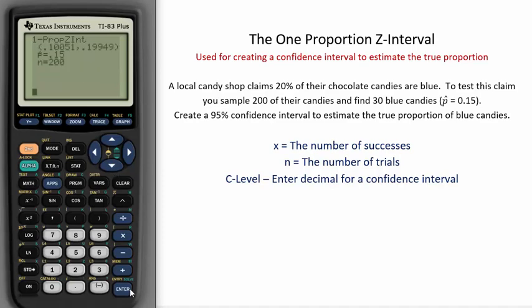When we hit Calculate, we are given our interval. I am 95% confident the true proportion of candies that are blue is contained in the interval 0.10051 to 0.19949. Even though the interval is close, 20% is not inside of our 95% confidence interval for the true proportion of blue candies at the store.